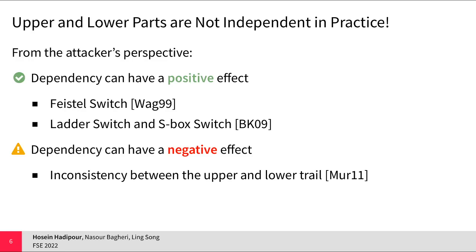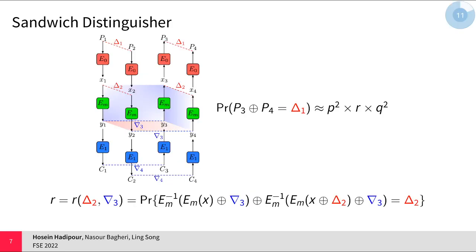On the other side, the dependency between upper and lower differential transitions can have a negative effect, implying some kinds of inconsistencies between them which spoil the boomerang distinguisher. Therefore, considering and formalizing the dependency between the upper and lower differential transitions in the boomerang distinguisher is of great significance. That's why the idea of the sandwich distinguisher was proposed.